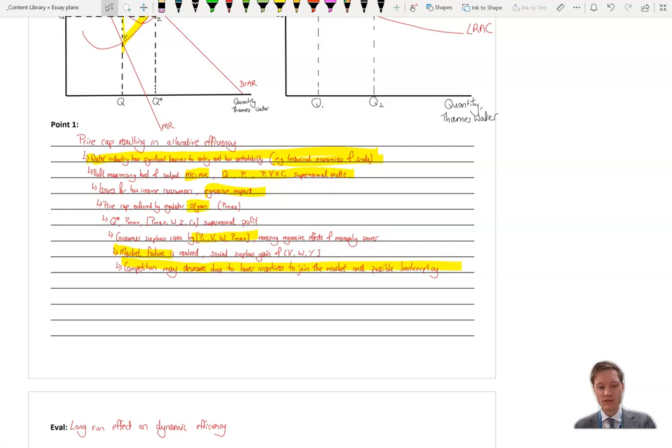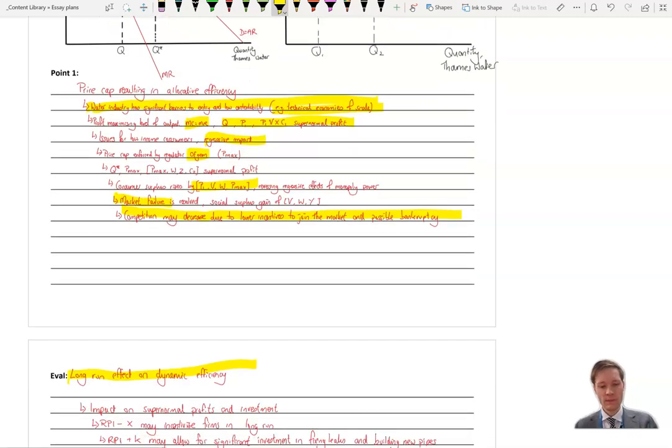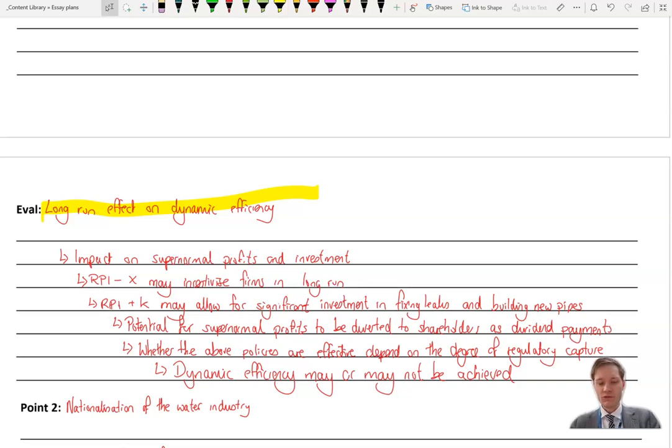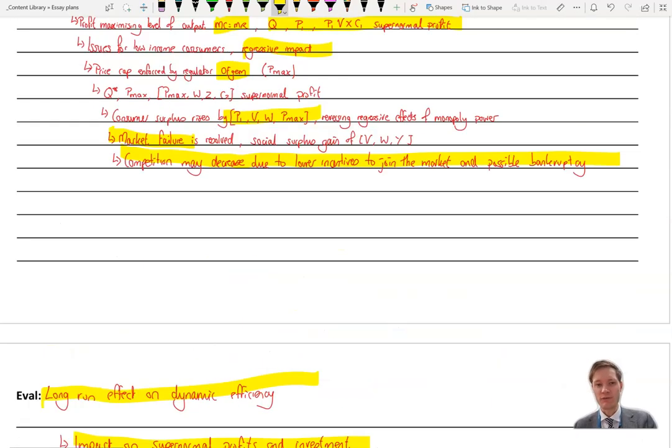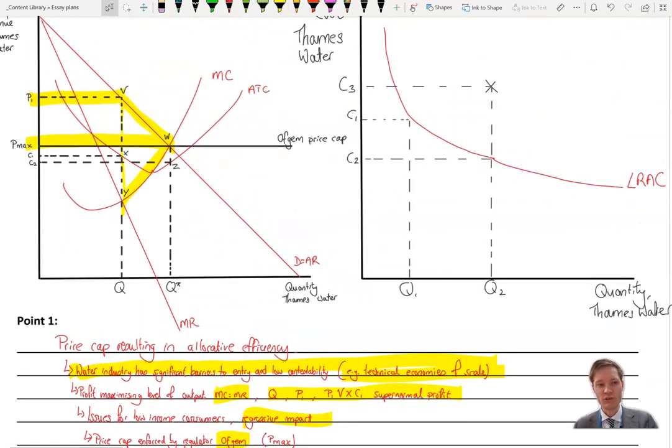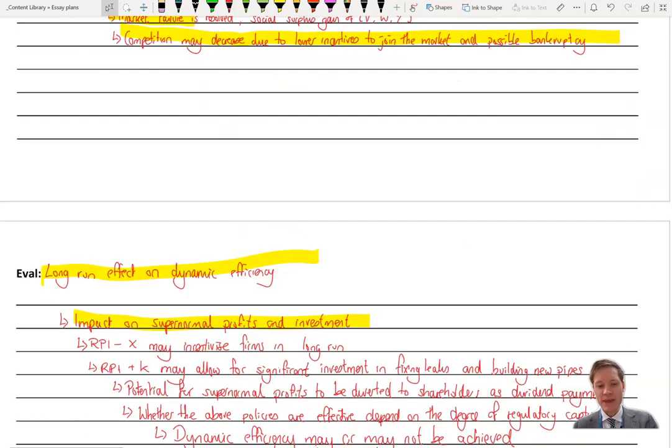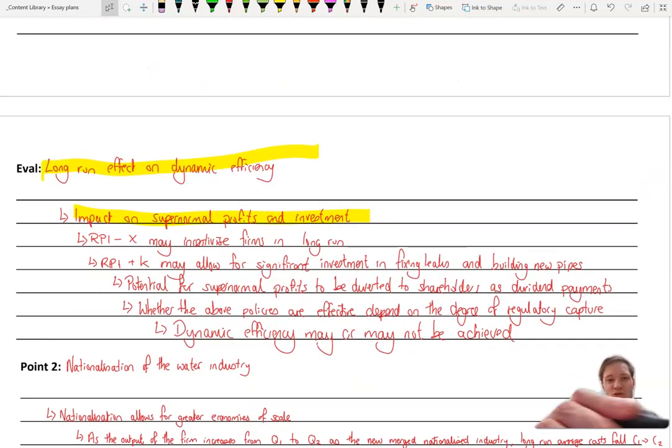Our evaluation. Pause the video for a second and think about how that might impact on long run dynamic efficiency and think about the role of the regulator when we're discussing that. Okay, coming back. So we want to know that we definitely want to know that long run, we want to argue against and say that this actually might have a negative impact on dynamic efficiency. It may mean that because supernormal profits have fallen, we now know that supernormal profits have fallen to Pmax WZC2, that area of supernormal profit has been lowered and therefore they may be less able to reinvest. And we want to include what that investment is. So we're talking about the sewage network, we're talking about the pipes, we're talking about the plants that clean the water and prevent sewage going into our rivers.